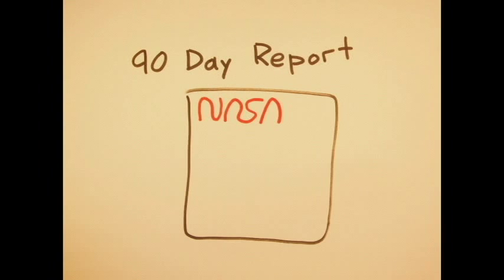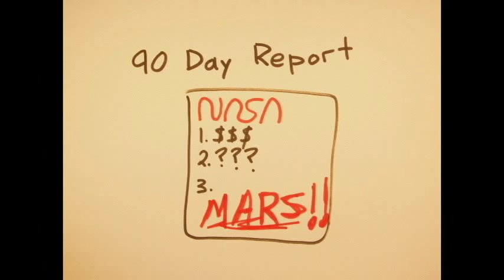NASA responded by commissioning the 90-day report, where they set out exactly what they would need to achieve their goal in a 30-year time frame. Here is a short summary of this plan.